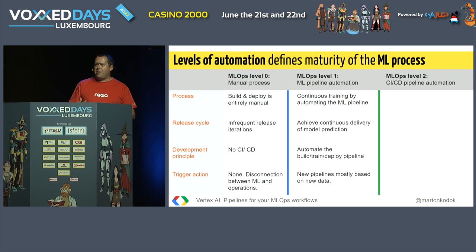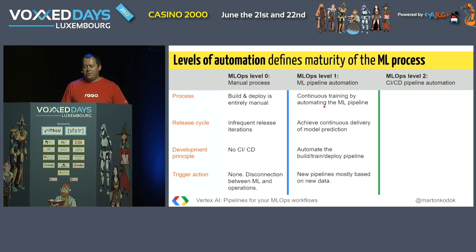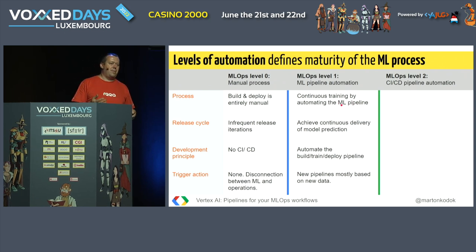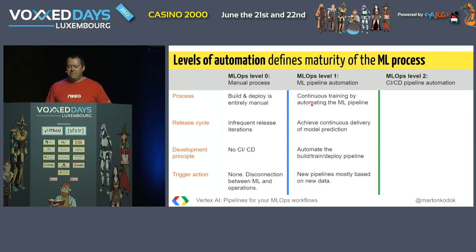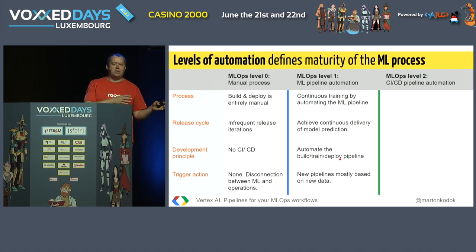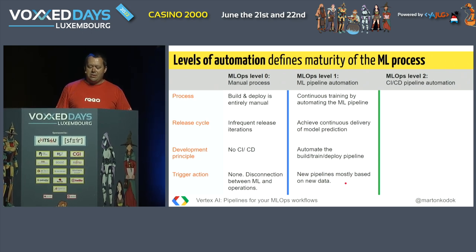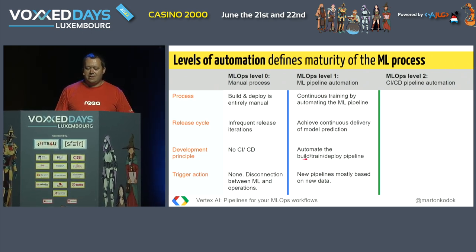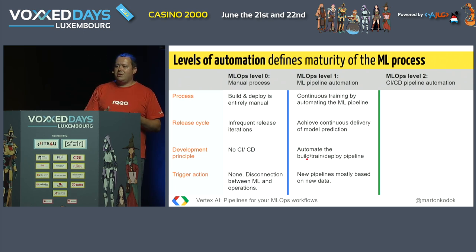When we talk about pipeline automation, there is continuous training by automating the machine learning pipeline. The key understanding is that a pipeline is set up by someone and then we automate the pipeline itself. You achieve continuous delivery of model predictions. You automate the build-train-deploy pipeline, where the pipeline may contain these three steps and automatically runs all three. New pipelines are mostly triggered by new data, going through the data source, training, and then deploying the model somewhere.